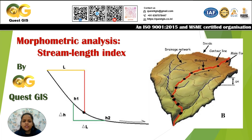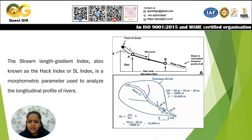Relief aspects measure the elevation and slope of landforms — examples include mean elevation, relief ratio, and slope. By analyzing these parameters, geomorphologists and geoscientists can gain insights into the geological history, climate, and hydrological processes of a region. This information is crucial for land use planning, natural resource management, and environmental conservation. Now let's begin by understanding our first morphometric parameter: the SL Index.